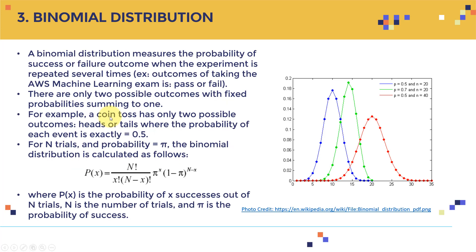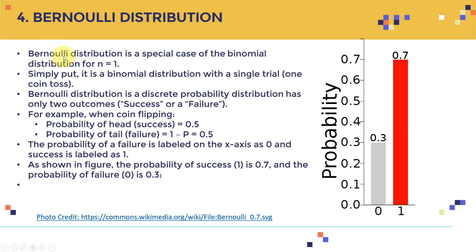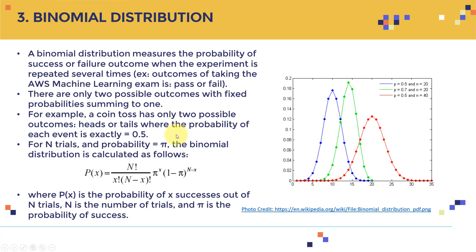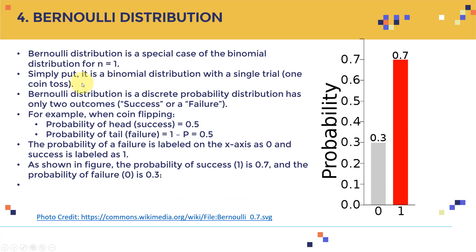The Bernoulli distribution is like a cousin of the binomial distribution. The key difference is that binomial distribution is the more general case — it allows n trials. The Bernoulli distribution is a special case where you only have a single run, a single trial. Simply put, it is a binomial distribution with one single coin toss.